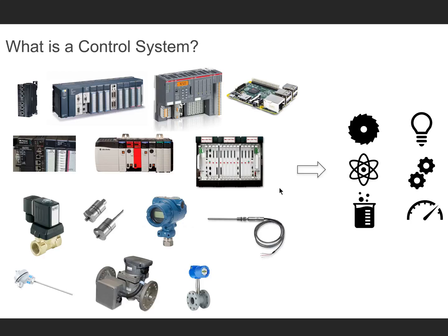These controllers interface with sensors and actuators — I'm showing a few of them down here. The feedback from the sensors tells the control system the current state of the system that it cares about. The controller takes that and decides what to do next — either to hold steady or to change a certain actuator output so that the system can run optimally.